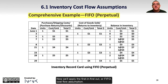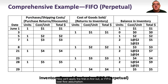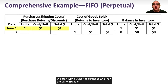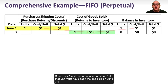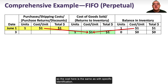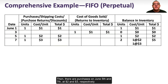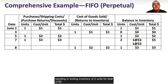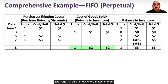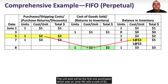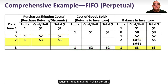Now we'll apply the first-in first-out or FIFO cost flow assumption. Starting with the June 1st purchase and then the June 3rd sale: since only one unit was purchased on June 1st, that unit must have been the one sold on June 3rd, so the cost here is the same as with specific identification. Then there are purchases on June 5th and 7th at $2 and $3 respectively, resulting in ending inventory of two units for a total of $5. On June 8th, the unit sold will be the first one purchased — from June 5th — with a cost of $2, leaving one unit in inventory at $3 per unit.